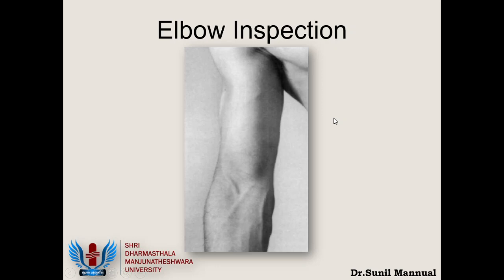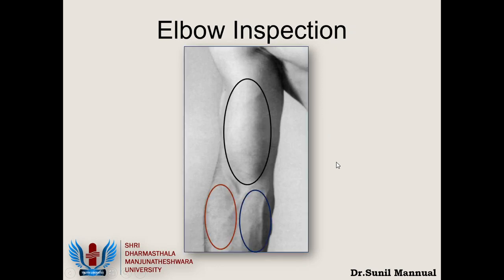Coming to elbow inspection from anteriorly — ignoring the dilated veins — you have three different muscle masses. The first is the flexor compartment of the arm. The second large muscle mass is the mobile wad (W-A-D), meaning purse. The third is the flexor compartment of the forearm. All of you can extend your elbow and appreciate these three muscle masses.